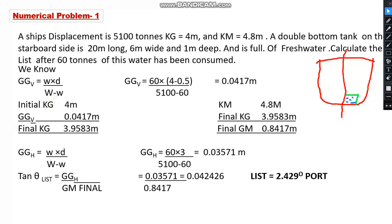And d is the distance between center of gravity of the ship and center of gravity of the tank or the location from which the mass has been removed. That is d.